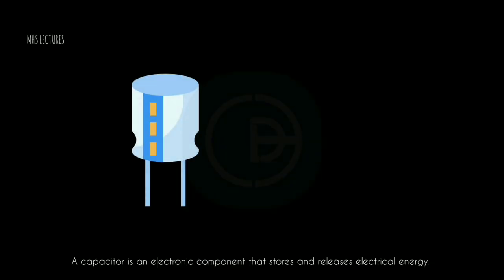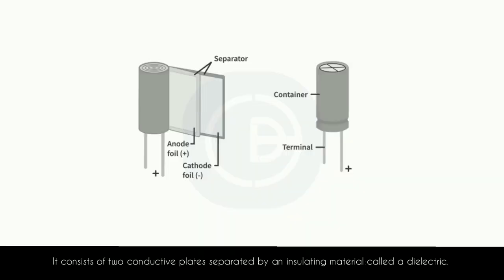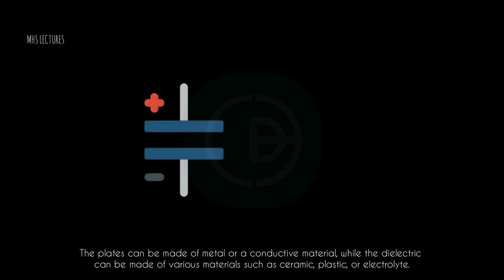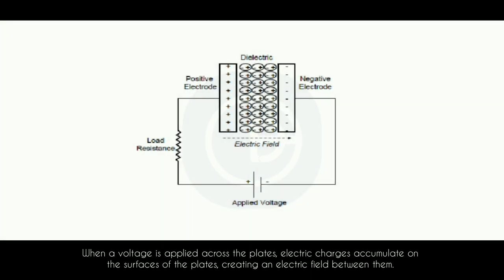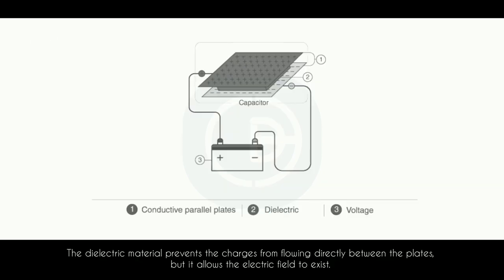A capacitor is an electronic component that stores and releases electrical energy. It consists of two conductive plates separated by an insulating material called a dielectric. The plates can be made of metal or a conductive material, while the dielectric can be made of various materials such as ceramic, plastic, or electrolyte. When a voltage is applied across the plates, electric charges accumulate on the surfaces of the plates, creating an electric field between them. The dielectric material prevents the charges from flowing directly between the plates, but it allows the electric field to exist.